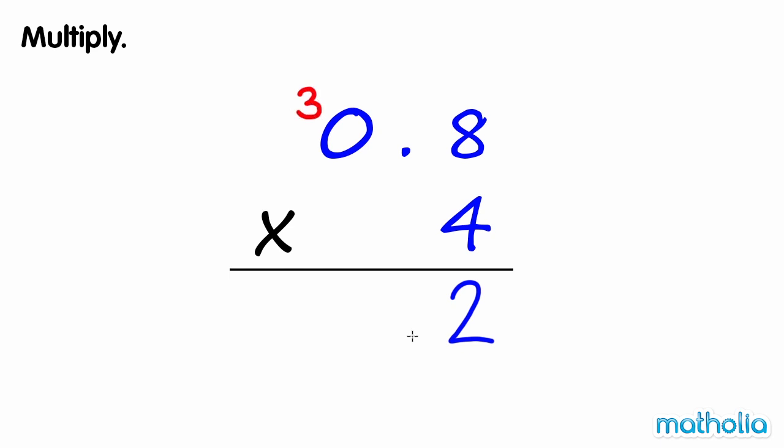Write the decimal point. Now multiply the ones. 4 times 0 ones equals 0. Add 3 ones equals 3. So 0.8 times 4 equals 3.2.